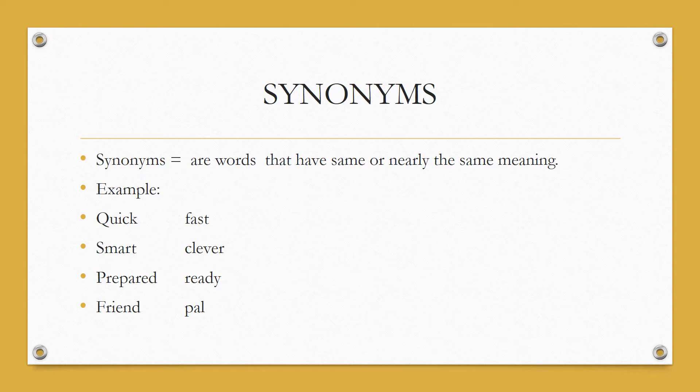For example, quick, fast, smart, clever. He is a smart boy. She's a clever girl. That means they both mean the same thing. Prepared, ready. We are ready for the exam. We're prepared for our exam. Friend, pal. Dan and Sam are my pals. Instead of saying friends all the time, you can choose to change your word and say they are my pal.